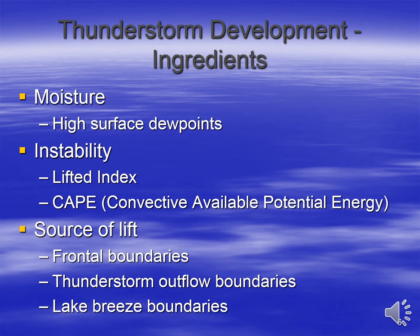The three main ingredients needed in the production of thunderstorms are moisture, instability, and a source of lift. Moisture is represented on a surface map by the dew point, with high moisture values typical when dew points are in the 60s and 70s. Instability is a measure of the ability of air parcels to rise, and rising currents of air are needed for thunderstorm production.